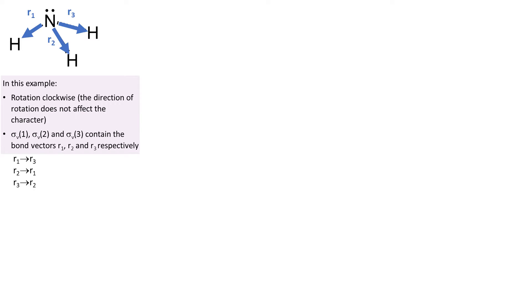Under c31 operation r1 goes to r3 and so on and we get these three equations which we can write in this form: symmetry operation, vector, transformation matrix, vector.